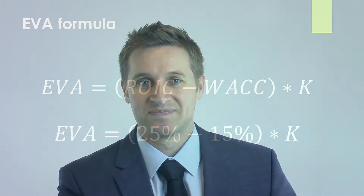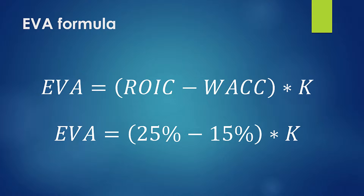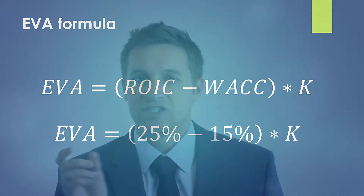Let's put some numbers into the equation. If our ROIC is 25% and our WACC is 15%, then the difference between the two is 10%, and we say that our spread is 10%. What that's telling you is that for every dollar of capital that is invested in this business, 10% of that capital gets converted into economic value added — or 10 cents on every dollar. So whether your capital is $1,000 or $1,000,000, 10% of that capital as it flows through your business is going to be converted into economic value added. Do you see how powerful that can be?